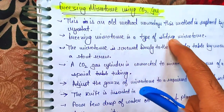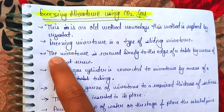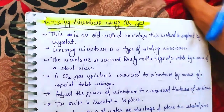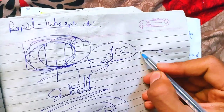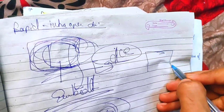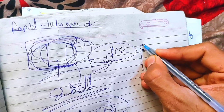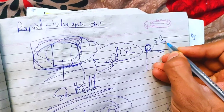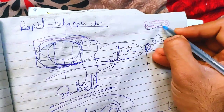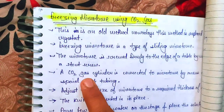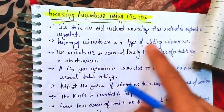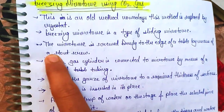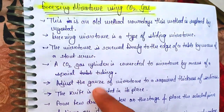The first step is to screw the microtome firmly to the edge of the table by means of a Scott screw. This ensures the microtome is stably fixed before use.